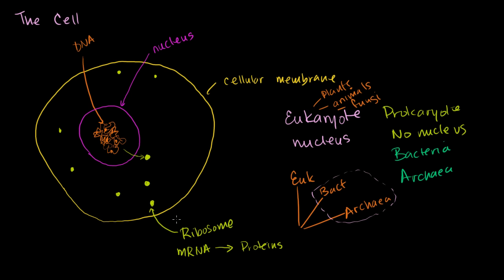These ribosomes are made up of proteins and RNA. One question is: where are the pieces of the ribosomes made? Some are made by proteins, which might be made in other ribosomes. The ribosome is a bit of a complex mix of protein and mRNA-like structures.